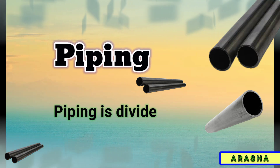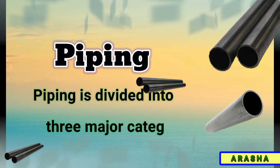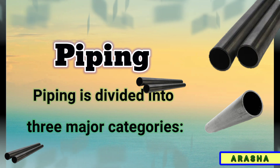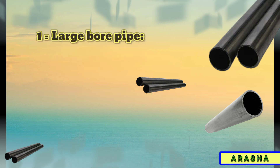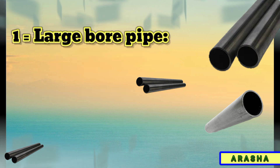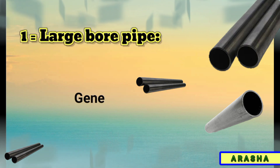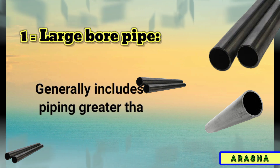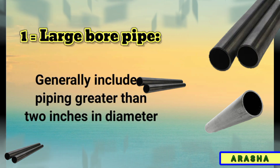Piping is divided into three major categories. Number 1: Large bore pipe. Generally includes piping greater than 2 inches in diameter.